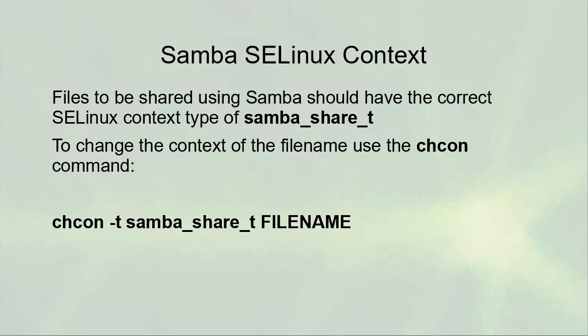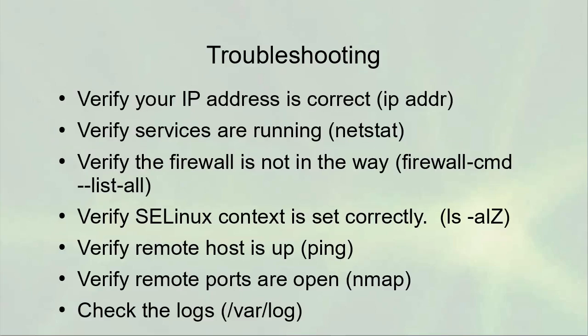When sharing your Samba shares, you might have issues with SELinux and their context. SELinux is very good for protecting you from bad mistakes, but files shared using Samba should have the correct SELinux context type of samba_share_t in order to be viewable by the Samba service. To change the context of the file, you can use the chcon command — change context — so chcon -t samba_share_t followed by your file or directory name, and it will change the context type so that the Samba service can see the file.